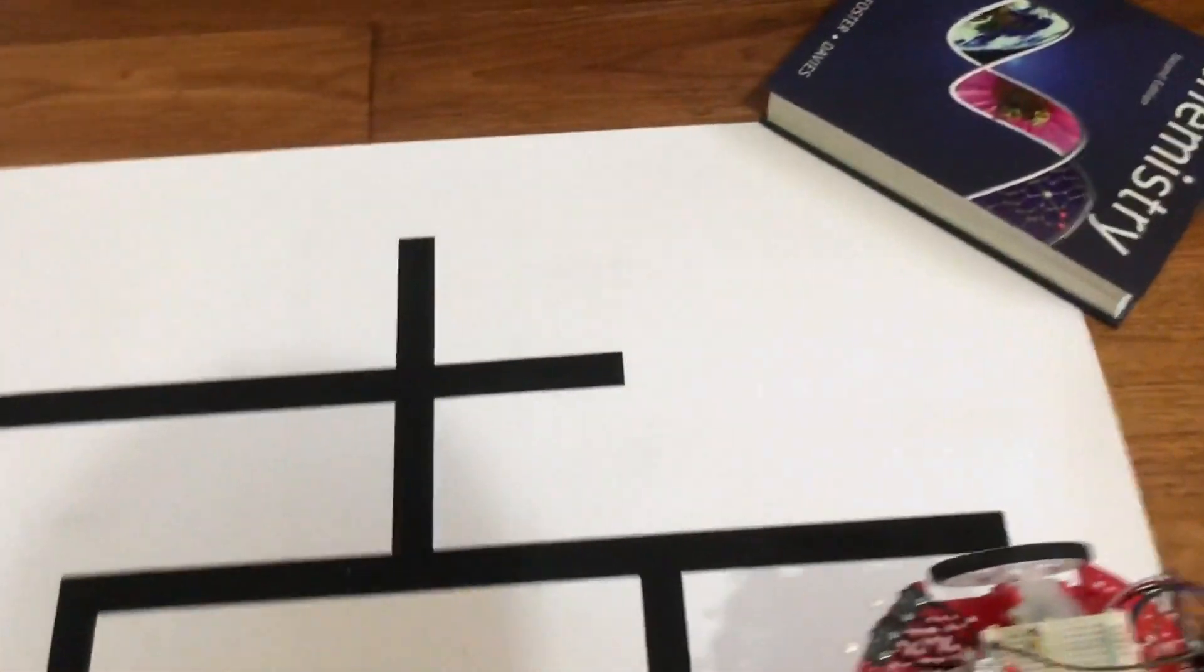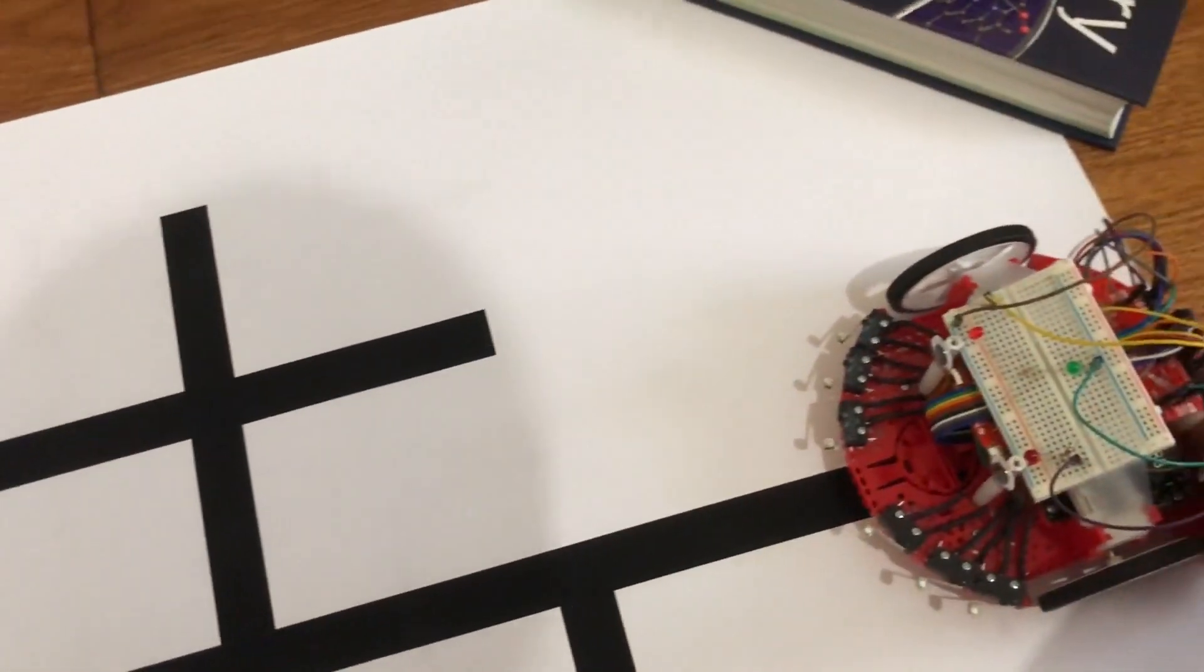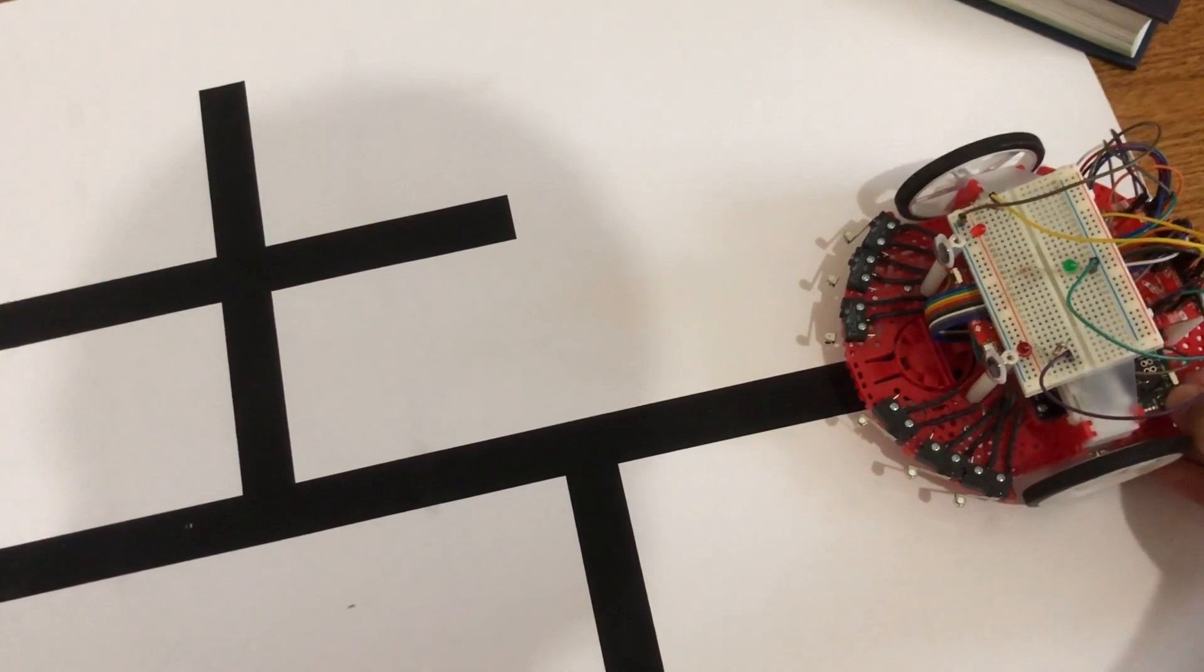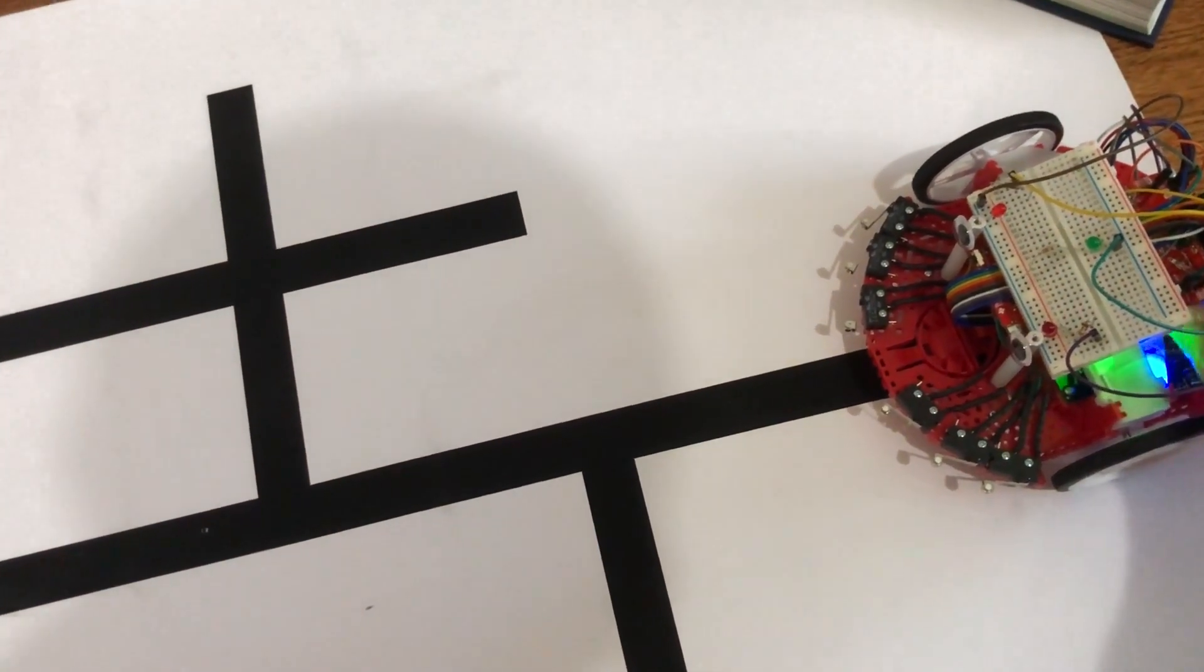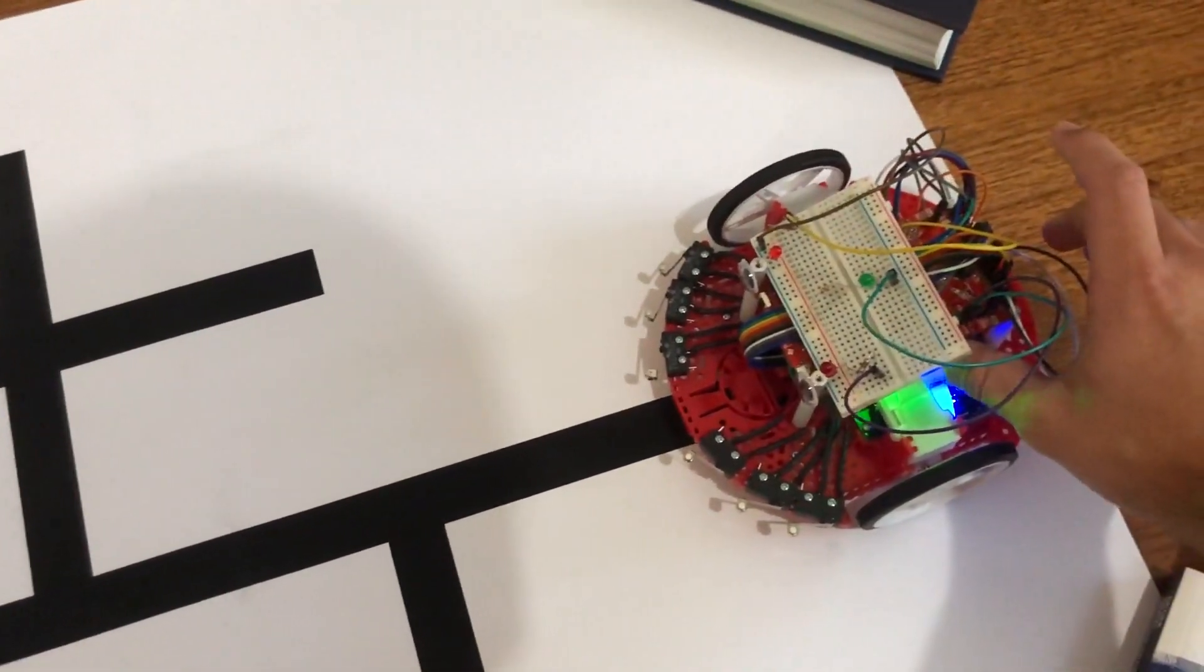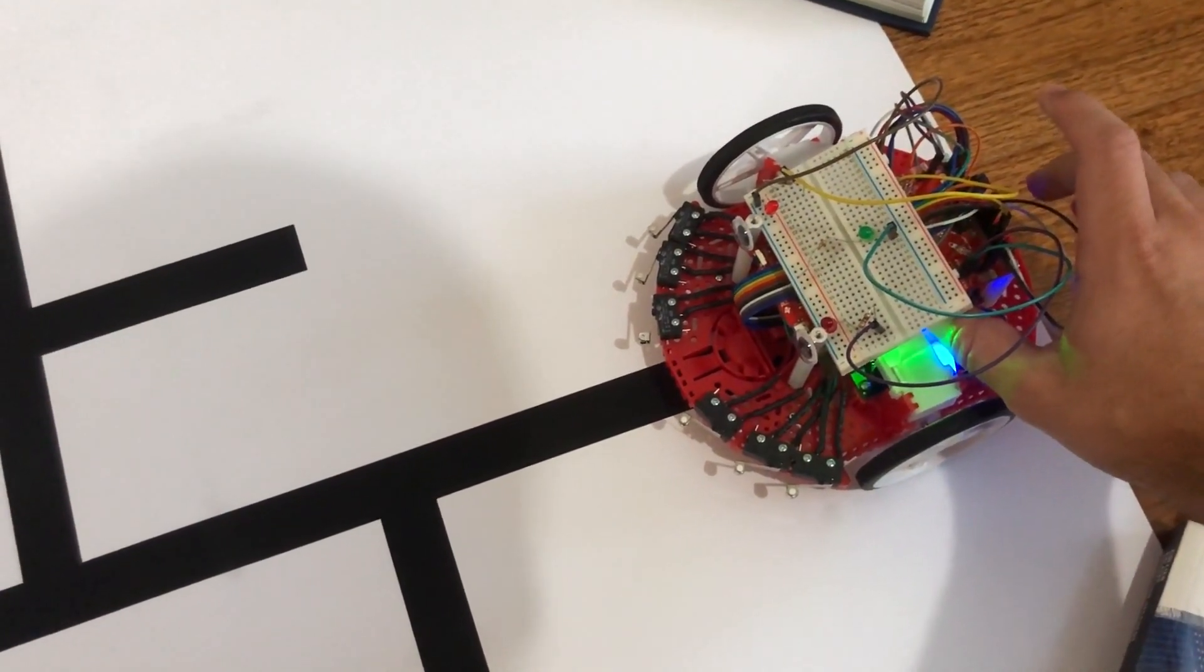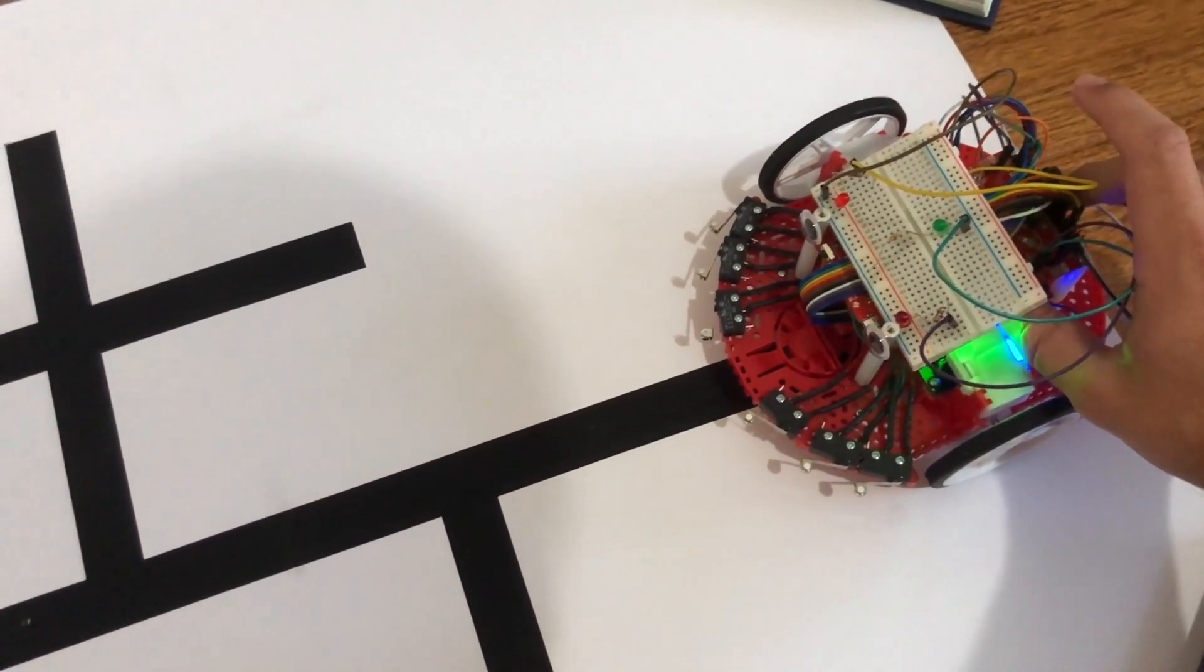The robot has already been programmed. I'm going to put it at the easy starting spot here and turn it on. I'm pressing the left button to tell it that the maze it's about to solve is a new maze.